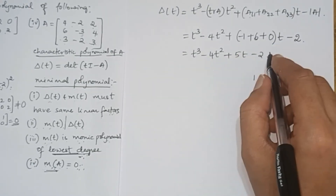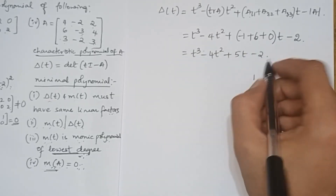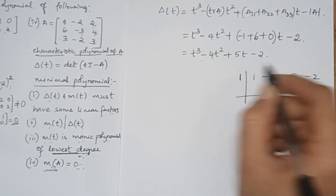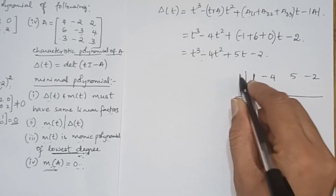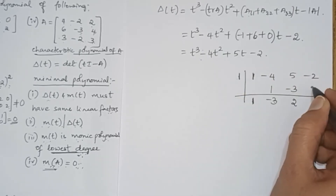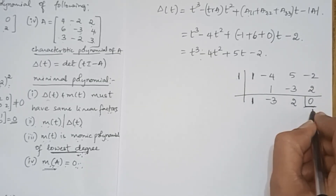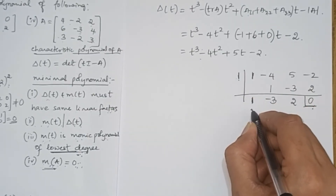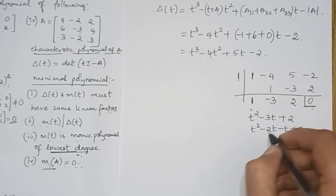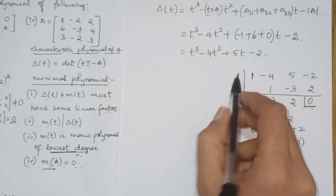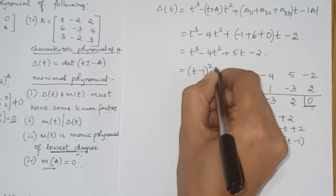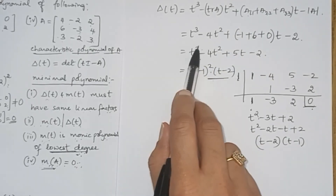To factor this cubic polynomial, use synthetic division. Write the coefficients as 1, −4, 5, −2 and test whether 1 is a root. Bring down 1; 1×1 = 1, −4+1 = −3; −3×1 = −3, 5−3 = 2; 2×1 = 2, −2+2 = 0. The remainder is 0, so 1 is a root and the remaining quadratic is T² minus 3T plus 2. Factoring: T² minus 2T minus T plus 2 = (T minus 2)(T minus 1). Combined with the known factor (T minus 1), the full factorization is (T minus 1)²(T minus 2).